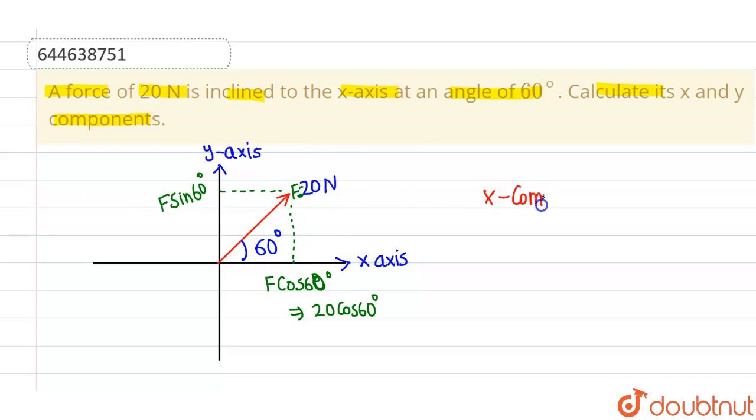If you calculate the x component of this 20 newtons force, which is 20 times cos of 60 degrees, and we know that the value of cos 60 degrees is 1 by 2, so this will be 20 into 1 by 2, which comes out to be 10 newtons. So this is the x component.